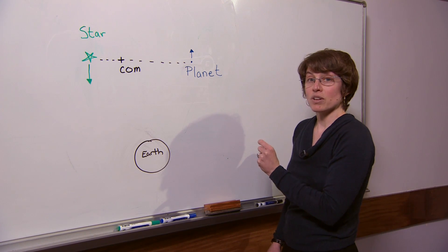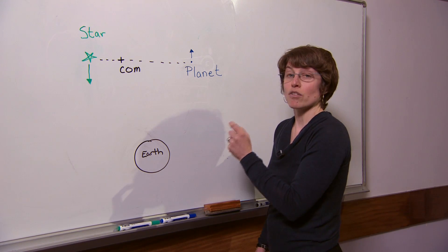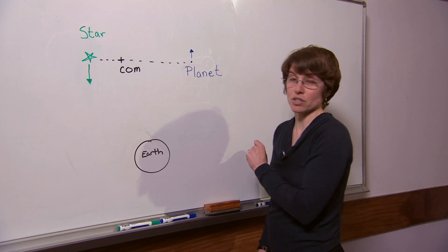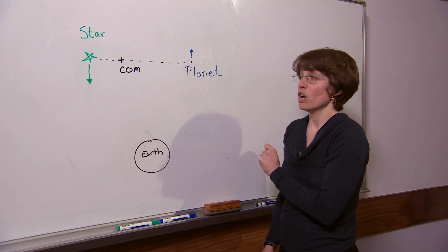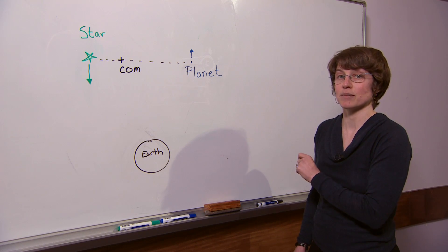Now by calculating the shift in the wavelength of the light from known emission lines from the star and the period of the star's orbit around the center of mass, we can determine the mass of the companion and tell whether or not the companion is a planet.